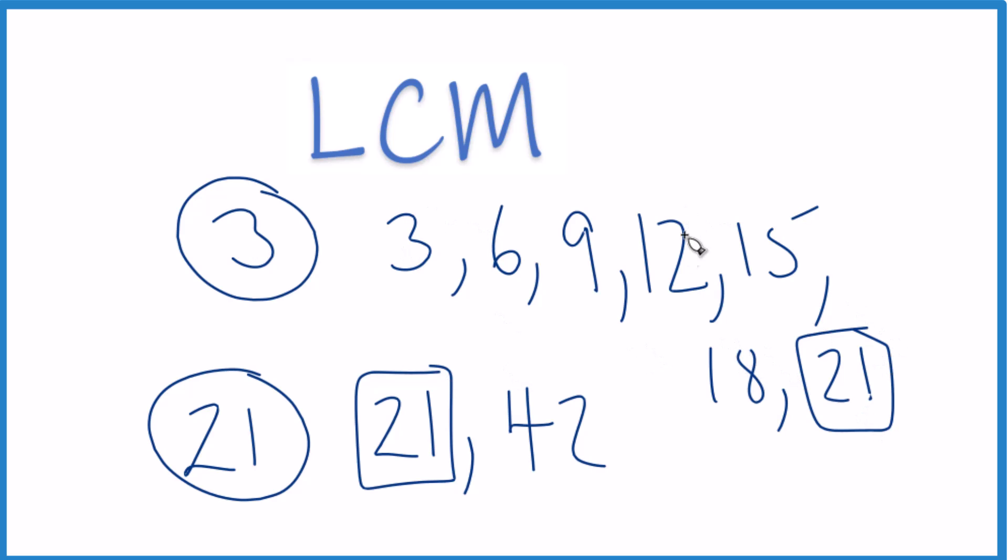So we have 21 as a common multiple here for 3 and 21. That's the lowest common multiple because it's the first one we found. So that's it. LCM for 3 and 21 is 21.